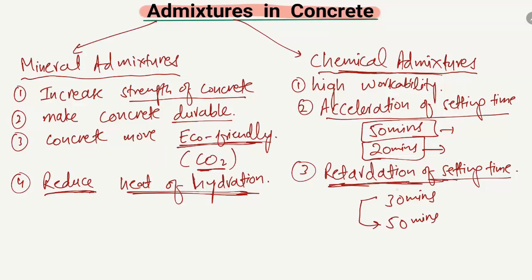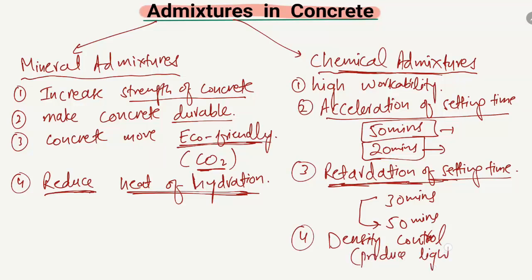The fourth benefit is the control of density. Chemical admixtures are also used for density control of concrete, which means we can produce lightweight concrete. These are the different advantages of mineral and chemical admixtures. Hope you guys understand, and don't forget to subscribe to our channel for civil engineering videos. Thank you for watching.